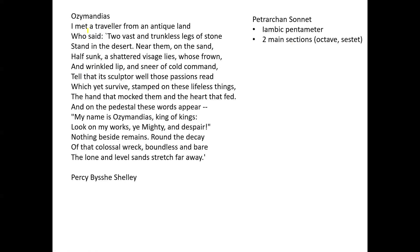We've got iambic pentameter, and we've also got two main sections within the poem. Typically, sonnets were used to explore elements of tension between two things — the first part would be where the problem is suggested, and the second part would be where the problem is resolved in some way. If you look at how this poem is divided up, you'll see that the first section is the first eight lines.